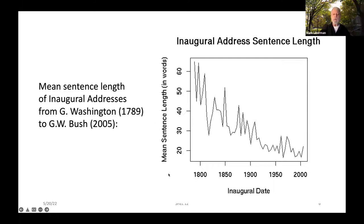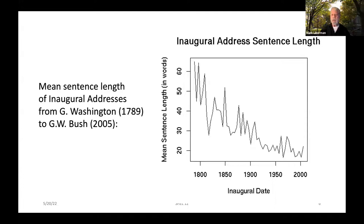If we go through the texts of the inaugural addresses and measure the length of each sentence and take the average, we get a graph showing mean sentence lengths from George Washington through G.W. Bush. This was something I did probably back in 2006, which is why it only went to 2005. You can see there seems to be a tendency for things to asymptote toward the bottom — and indeed that has continued, because if you fit a line to the points up to around 1950 and continue it, pretty soon the average sentence duration would be negative.